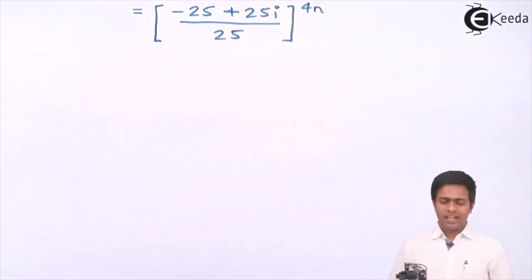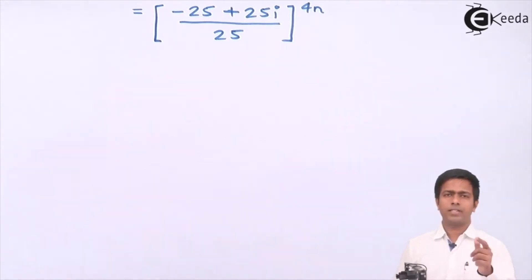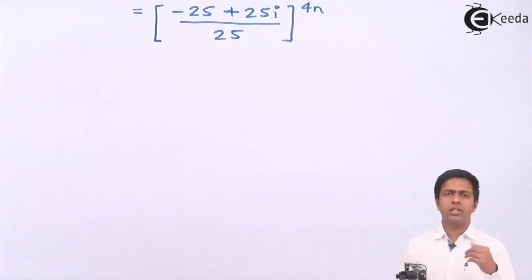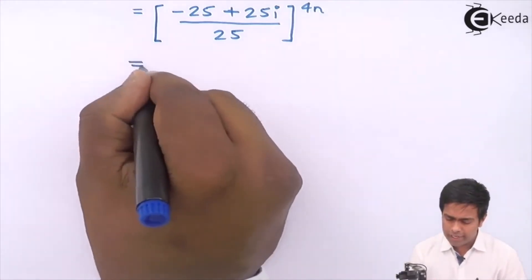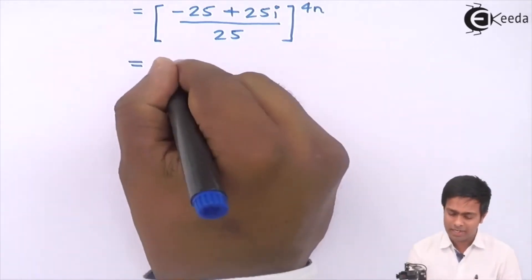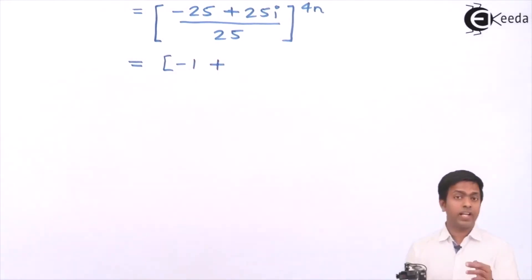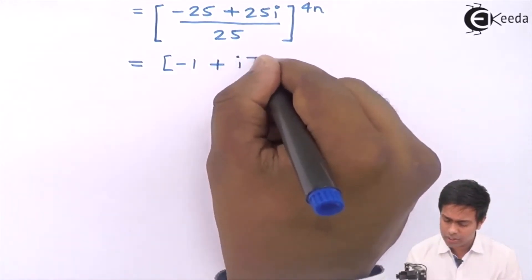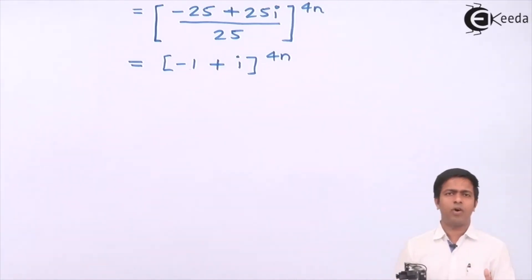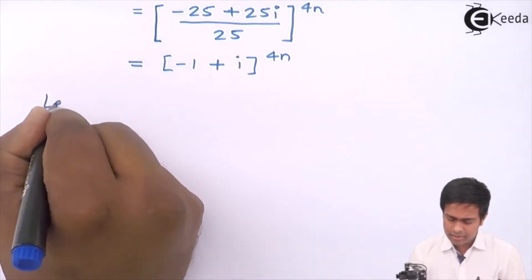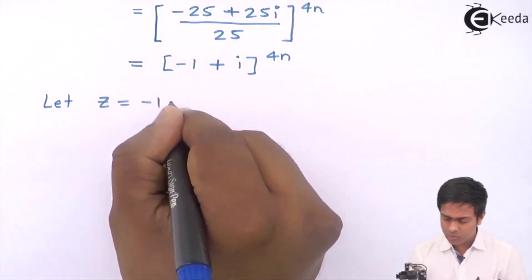We have successfully removed the imaginary part from the denominator. Dividing separately: -25/25 = -1 and 25i/25 = i. So the number in standard form is z = -1 + i. Now we need to convert this into polar form and then apply De Moivre's theorem.